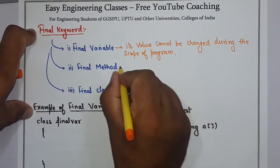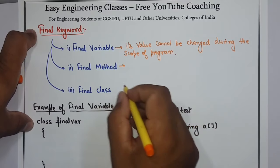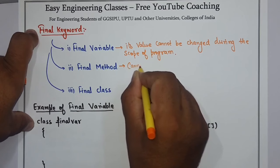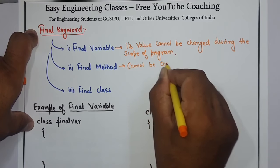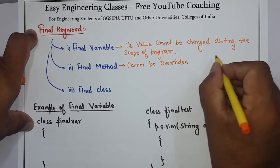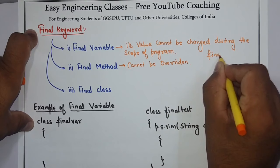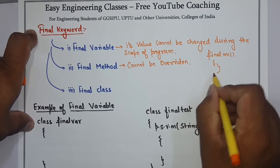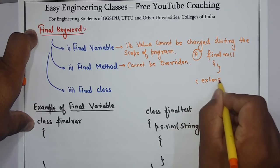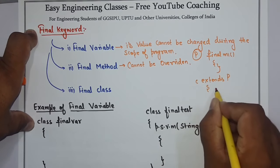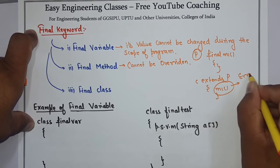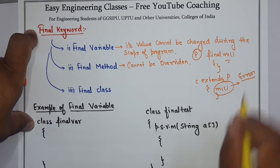The second use is a final method. A method declared as final cannot be overridden. Suppose that method is final M1 in class P, and class C extends P — you will get an error showing that a final method cannot be overridden.